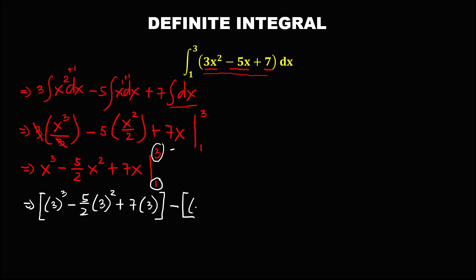For the lower limit, substituting x = 1: we have (1)³ minus (5/2)(1)² plus 7 times 1. Then we simplify. 3³ equals 27.